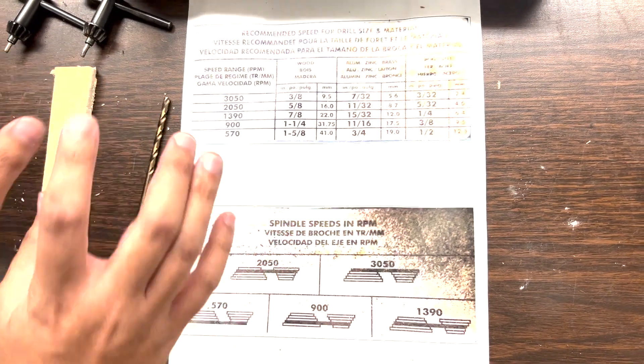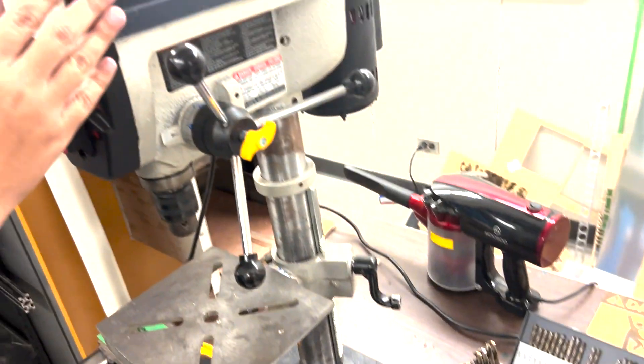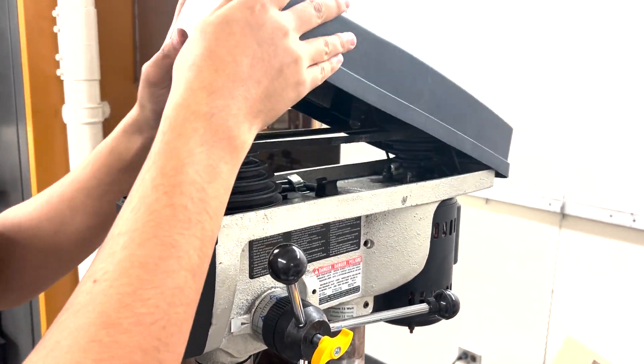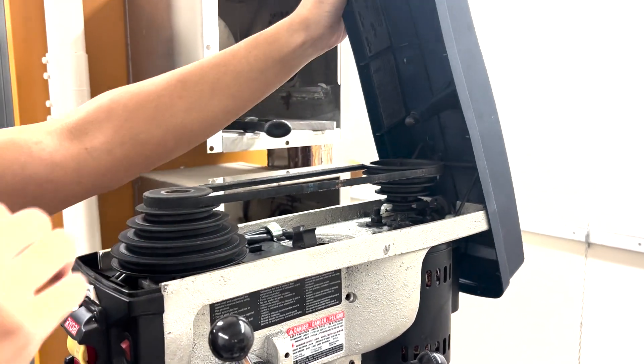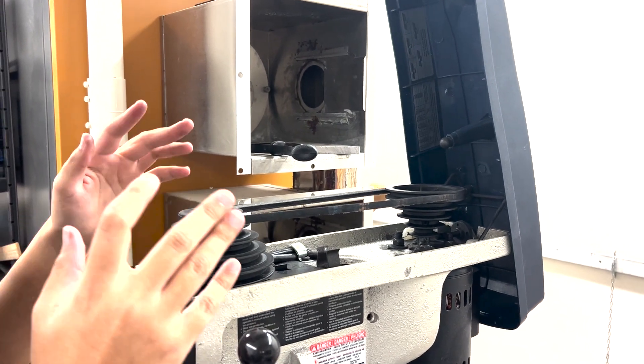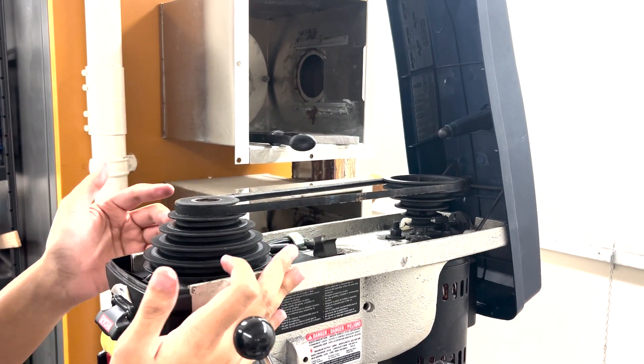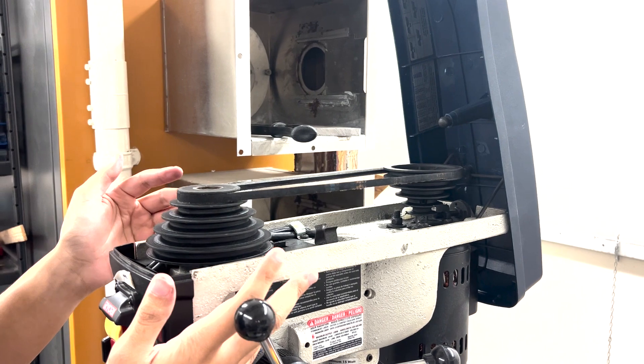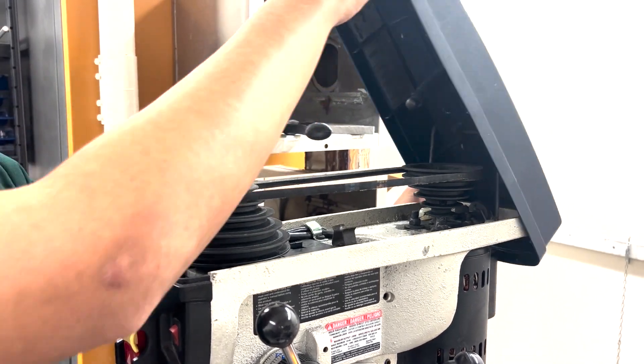In order to set that, you go to this head assembly here and take off the cover. Simply lift up and push back, and you want to set the pulley system according to that picture. Since it's already set up to the 3050 setting, you can take this cover and put it back on.